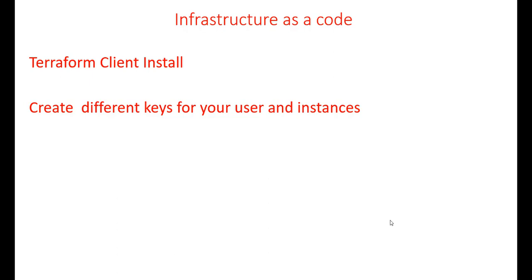Once the files are completed and checked via Terraform utilities, the software talks to Oracle Cloud Infrastructure via API. It does a test run with your configuration and gives output showing any errors and what is going to be created. Terraform also keeps track of what is deployed — for example, if you drop an instance through the console and run the code again, it will know the instance is missing and recreate it.